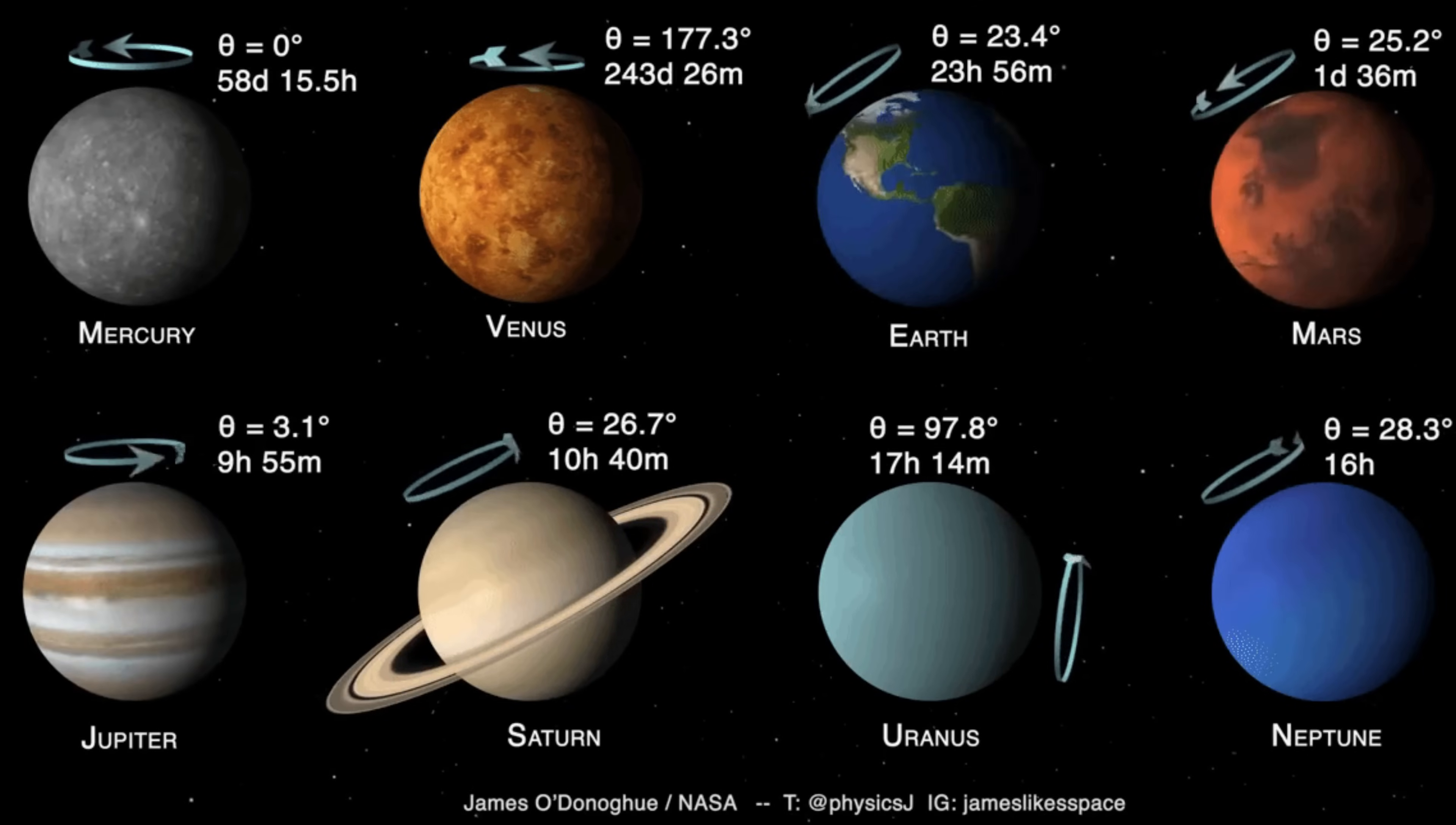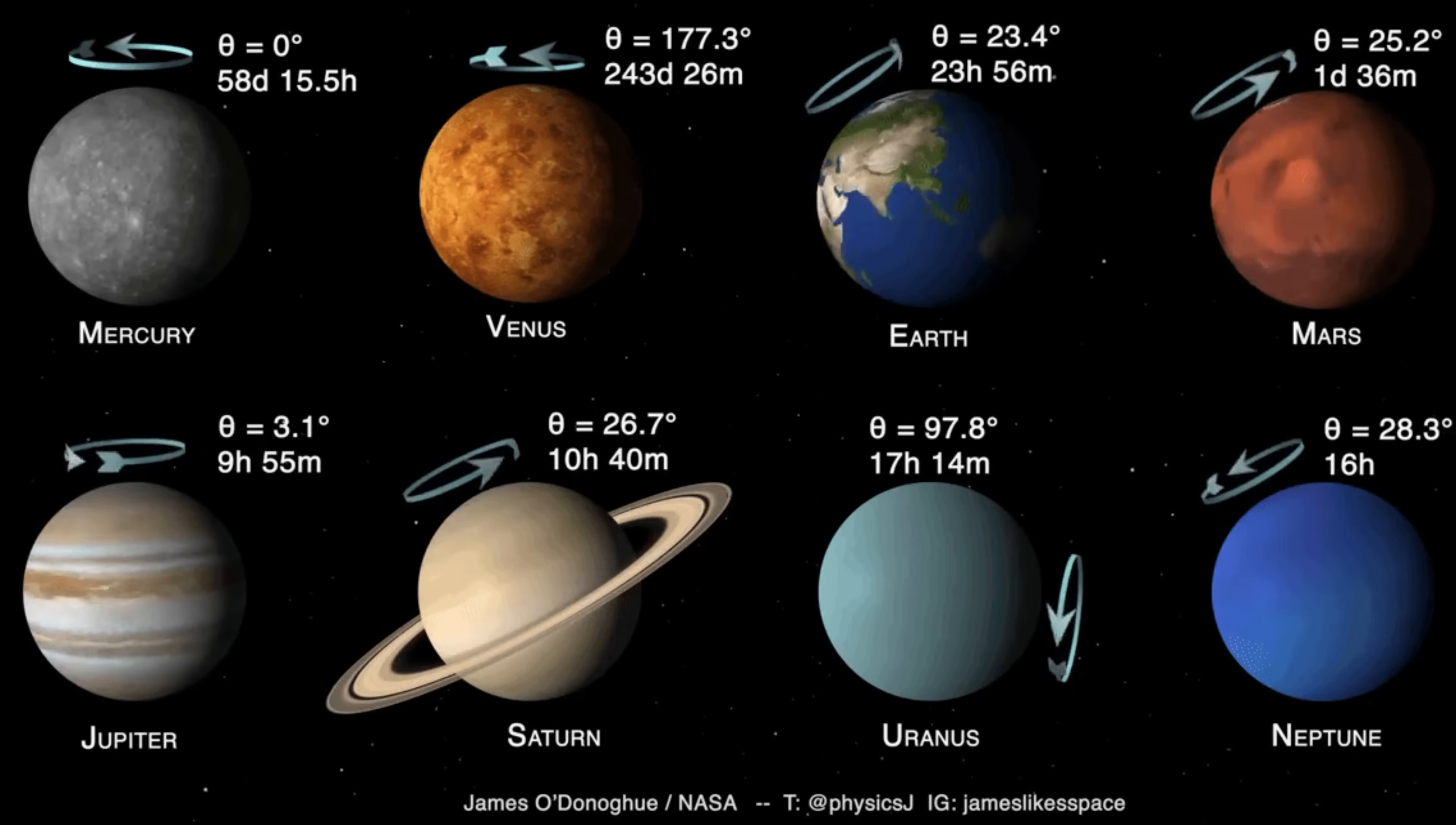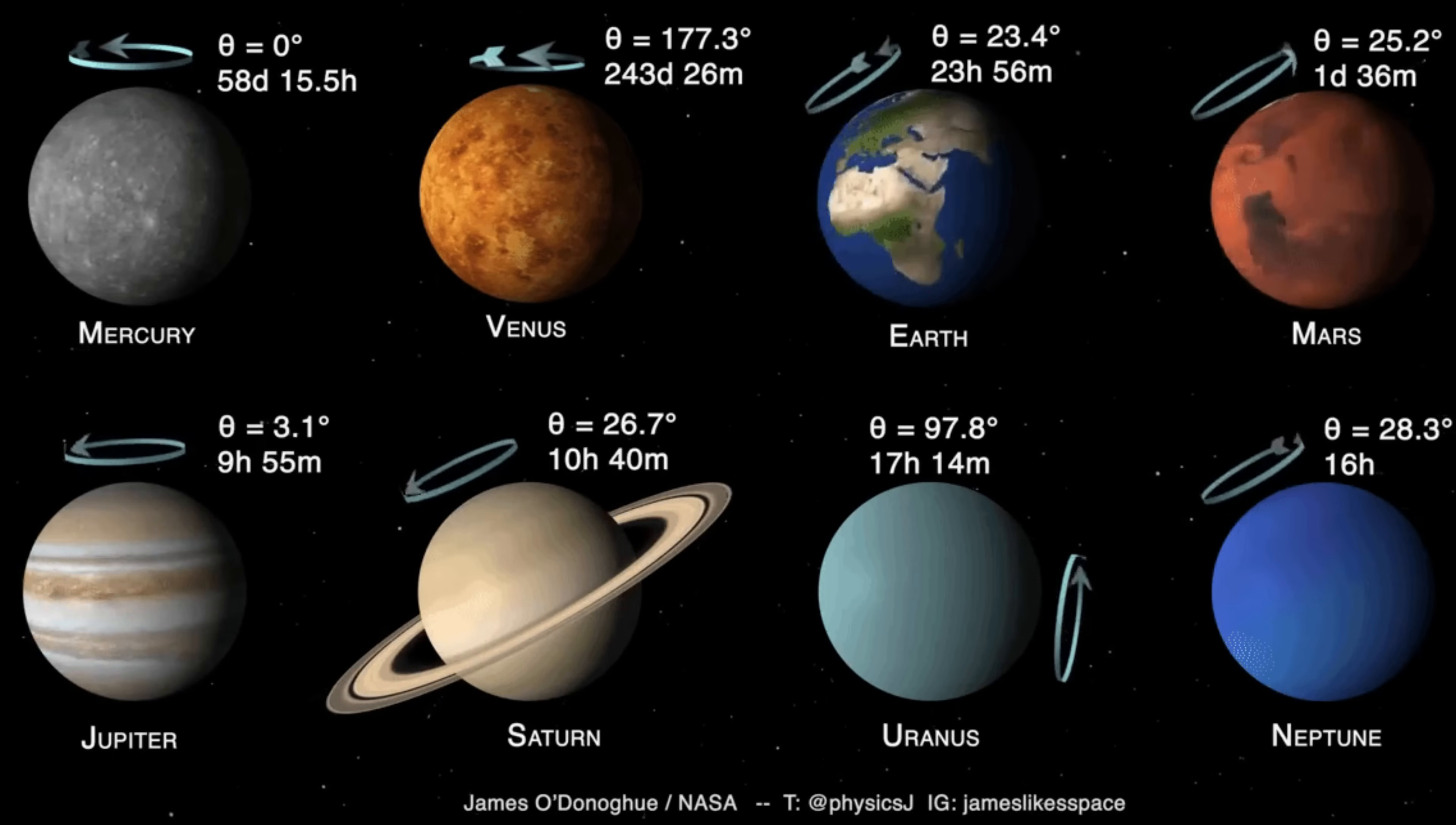Besides orbiting the sun, each of the eight planets in our solar system also rotates on its own axis. Remember, an axis is the imaginary line that goes from the planet's north pole through its south pole, right through its center. One day on a planet is the time it takes the planet to rotate one full time on its axis.